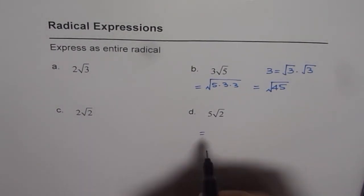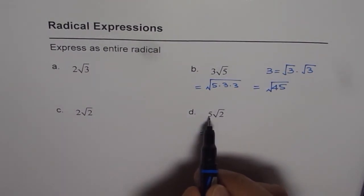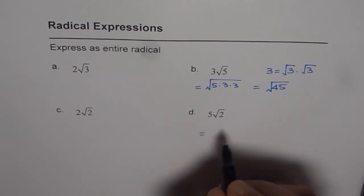Now in this case, let me do D for you now. 5 square root of 2. So if I want to bring 5 inside the radical sign, what should I get in? 5 is as good as square root of 25. Do you see that? 5 is square root of 25.